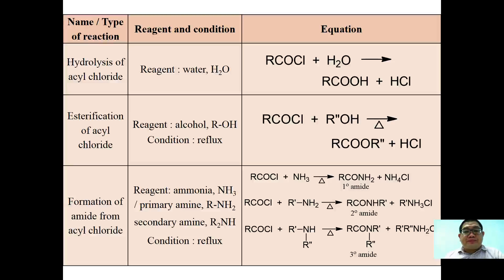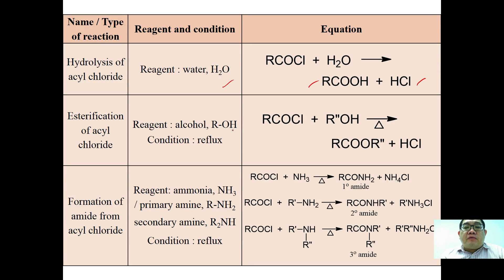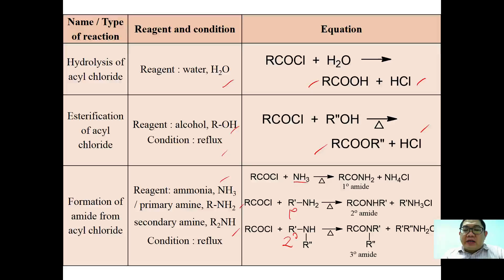Here we look at three chemical reactions of acyl chloride. First, reaction with water to form back a carboxylic acid with hydrogen chloride. Second, reaction with alcohol under reflux to form ester plus hydrogen chloride. Third, reaction with different classes of ammonia and amines to form different classes of amide — ammonia gives a primary amide, primary amine gives a secondary amide, and secondary amine gives a tertiary amide.